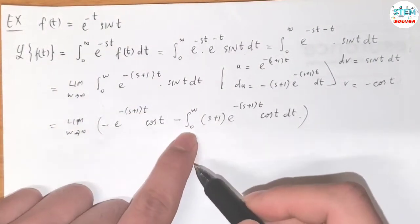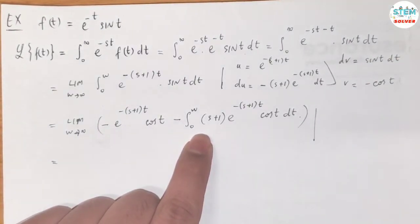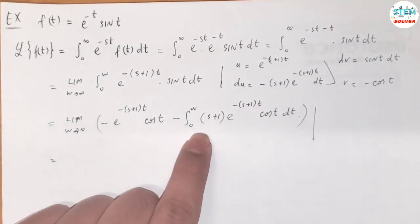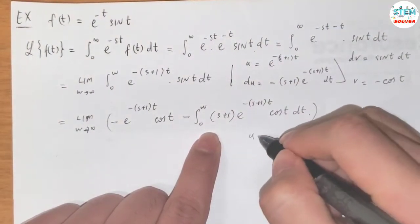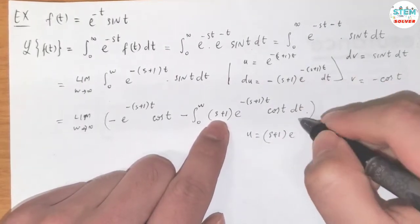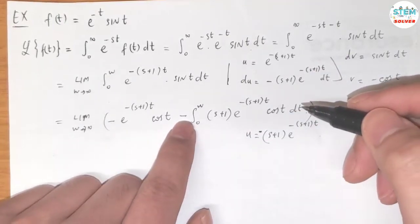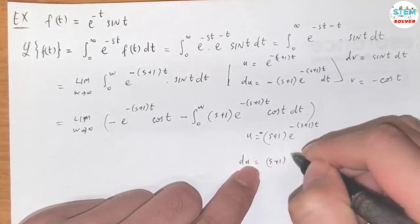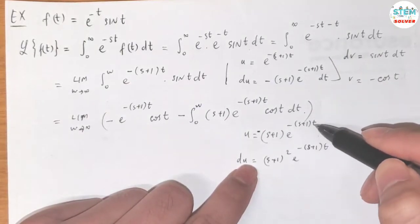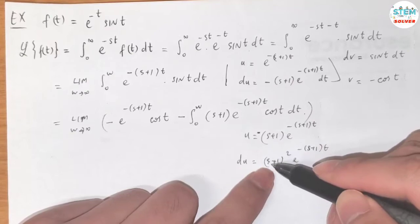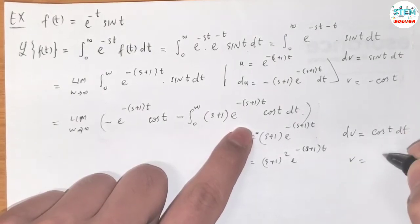We still have an integral remaining, so we apply integration by parts again. Let u = -(s+1)·e^(-(s+1)t), then du = (s+1)²·e^(-(s+1)t) dt — the negatives cancel to give a positive (s+1)². Let dv = cos(t) dt, then v = sin(t).